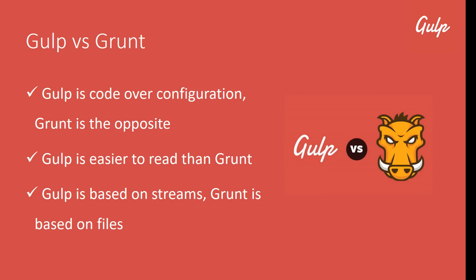Gulp isn't the only task runner out there. One of the other big ones is Grunt, which you may have used or heard of. I'm not here to bash Grunt — it's a great tool — but I prefer Gulp and it seems to be more popular in the JavaScript community. One big difference is Gulp is code over configuration: Gulp tasks are coded using node-style syntax. Grunt is configuration over code, meaning all tasks are configured inside a configuration object inside the Grunt file. Overall I prefer Gulp. It's much easier to read, you can easily define tasks with the pipe operator, and Gulp is based on streams while Grunt is based on files and configuration.